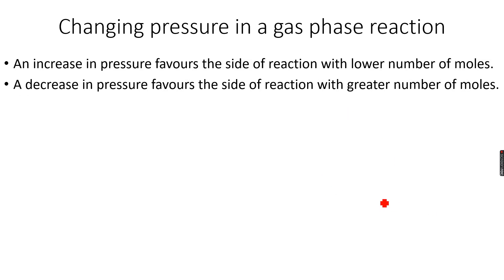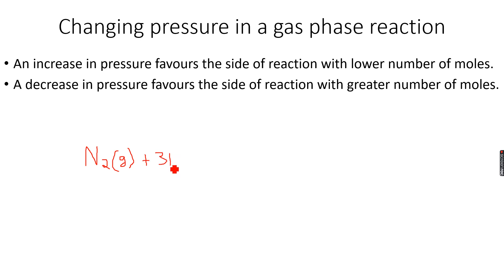Now, changing pressure in a gas phase reaction. My favorite example for this: N2 gas plus 3H2 gas gives an equilibrium reaction to form 2NH3.